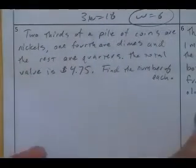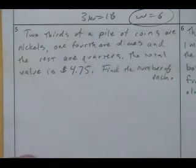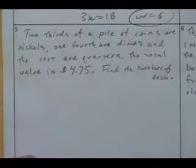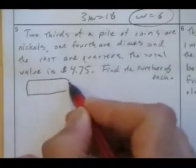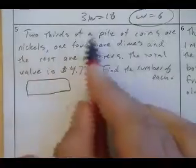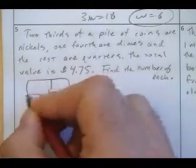Two-thirds of a pile of coins are nickels. One-fourth are dimes, and the rest are quarters. The total value is 475. Find the number of each. So let's see, pile of coins. I'm going to put a pile of coins all stacked up. Two-thirds are nickels, that's about two-thirds.